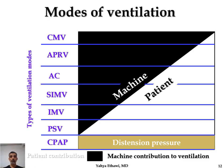Looking at a mode comparison diagram, the black color shows how much the machine is contributing and the white color shows how much the patient is contributing. You can also see the level of CPAP. CMV is mostly provided by the machine. APRV — which I did not mention because it is mostly an adult mode — is a bit different, providing continuous positive inspiratory pressure.